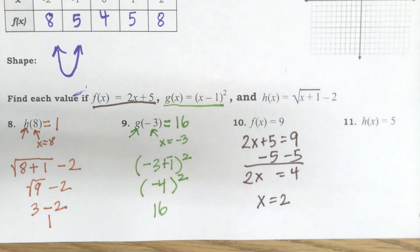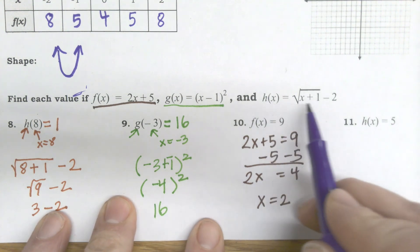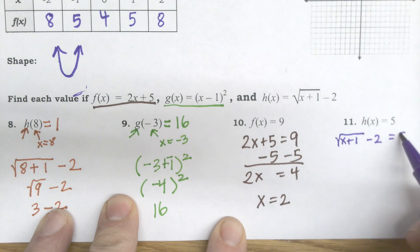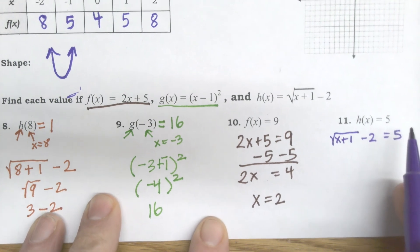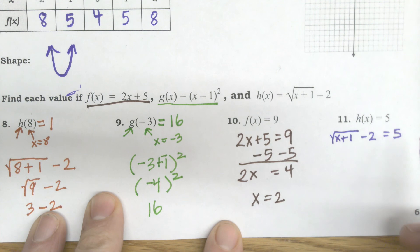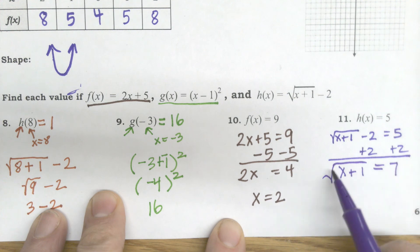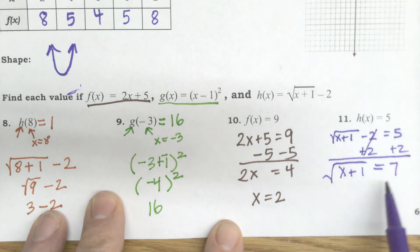My last one is the h function, h of x equals 5. That means I'm going to go back to this h function and I'm going to put in the square root of x plus 1 minus 2 equals 5. Now, this one's going to require a little bit of work. I'll start the same way by getting rid of that subtraction. So I end up with the square root of x plus 1 equals 7. It was minus 2, so I added 2 on both sides. That got rid of it. Now, this is a thinker.